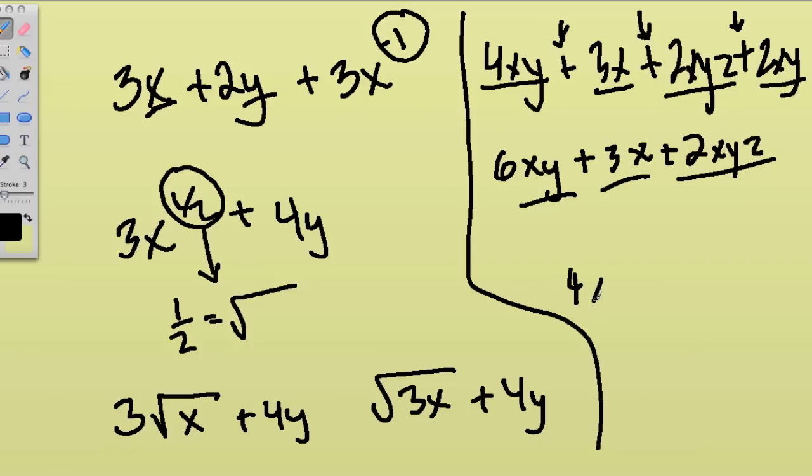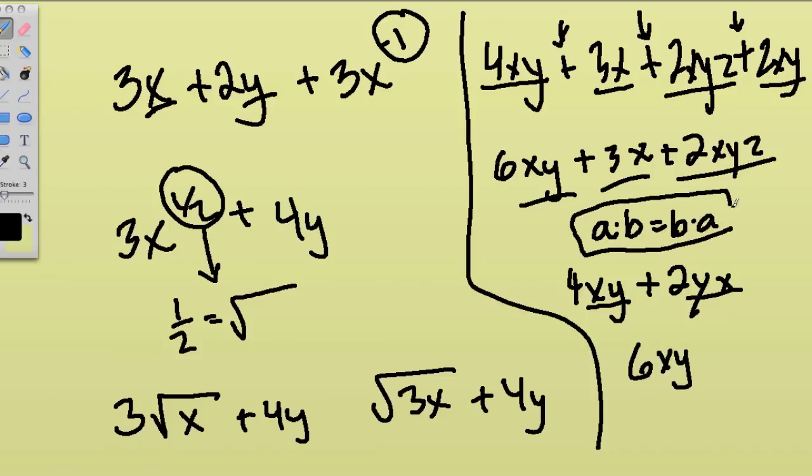Also be careful. Let's say you have 4xy plus 2yx. This is 6xy. Now, the reason is because even though these two letters are in a different order here, remember that any number, like a times b equals b times a. This is the commutative property of multiplication, and it pops up all the time. So when you're multiplying, the order doesn't matter as long as you have the same letters. You can combine them.